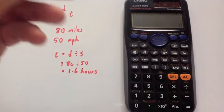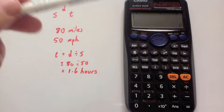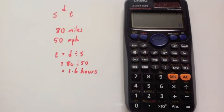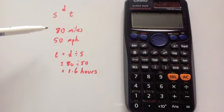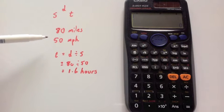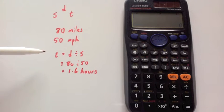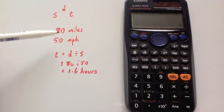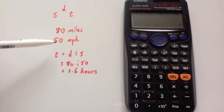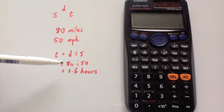In this video I'm going to show you how you can use your Casio calculator to convert time from hours into hours and minutes and seconds. Here I've got a typical speed distance time question where something travels 80 miles at 50 miles an hour and the question says how long does it take? Time is distance divided by speed, so I've done 80 divided by 50 and I've got 1.6 hours.